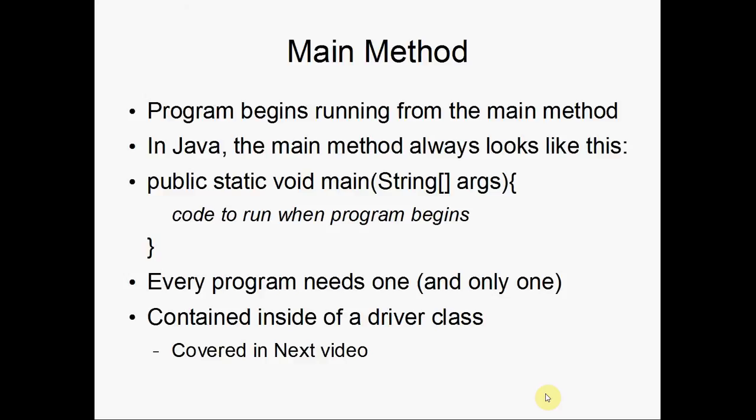So, on our final slide, we're going to discuss the main method. So, your Java programs begin running from the main method. And in Java, the main method will always look like this. Public. Static. We'll get to that later in the next lecture. Void. Remember that return type. Main. And it passes in a string array of arguments called args.